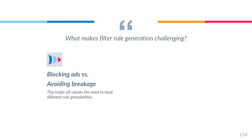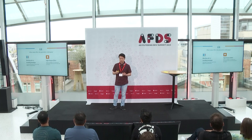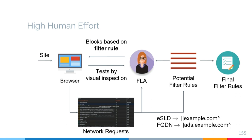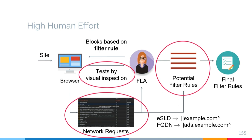The second challenge is that there's high human effort in the creation and maintenance of filter rules. We studied the human workflow of a filter list author when they create URL-based filter rules. We find high human effort in areas where the filter list author has to consider all the outgoing network requests to try and block, and all the potential filter rules that may block those requests, as well as the multiple manual visual inspections they conduct to see whether the rules are effective at blocking ads or avoiding breakage.